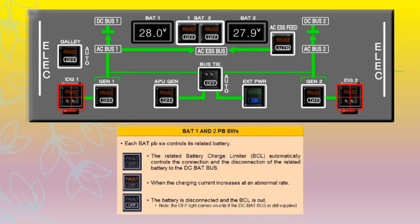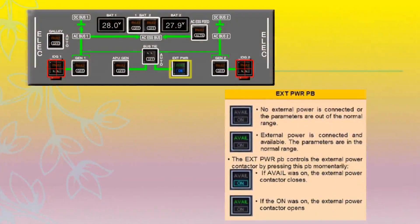When there are no lights on the external power pushbutton, it means no external power is connected or the parameters are out of normal range. The AVAIL light shows in green when external power is connected and available with parameters in the normal range. Pressing the pushbutton momentarily, the ON indication appears blue when AVAIL was on and the contactor closes supplying the aircraft network. If the contactor opens, the blue ON light extinguishes and the AVAIL green light comes on.